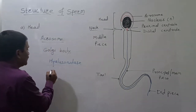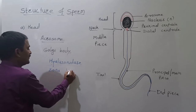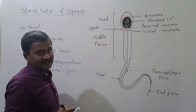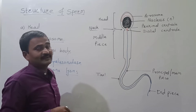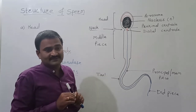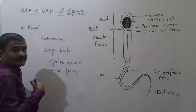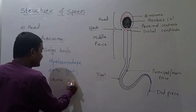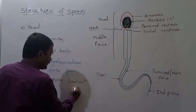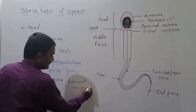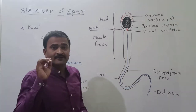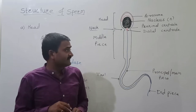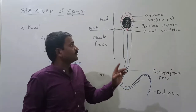The acrosome also contains some proteolytic enzymes, and together they are called zona lysins. In short, this acrosome stores hydrolytic enzymes like hyaluronidase, zona pellucida enzymes, and corona-penetrating enzymes, and these enzymes help in the process of fertilization.